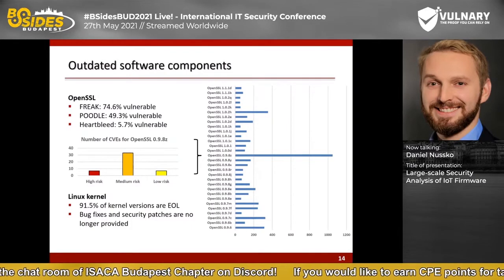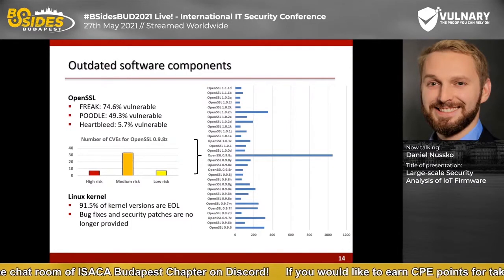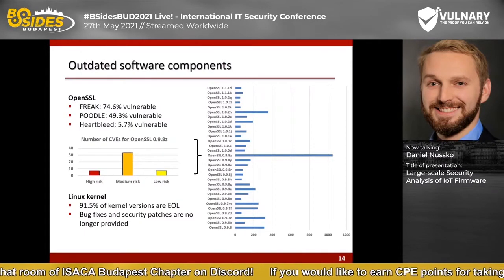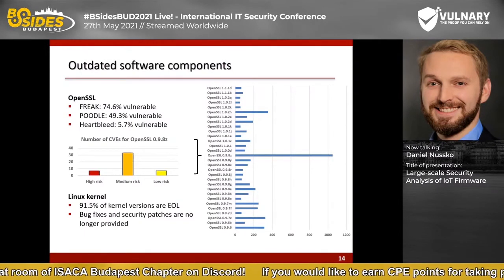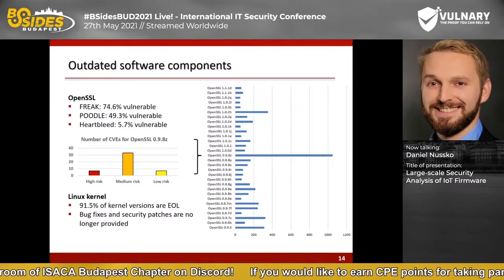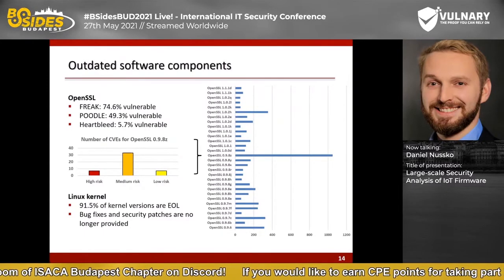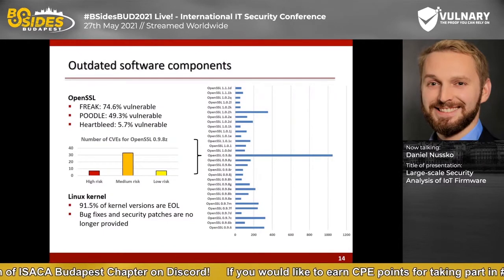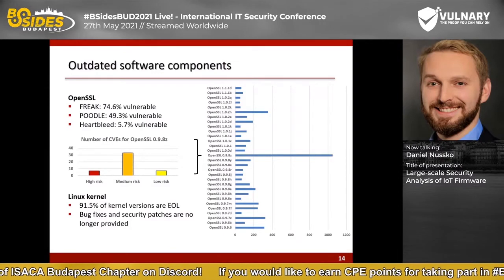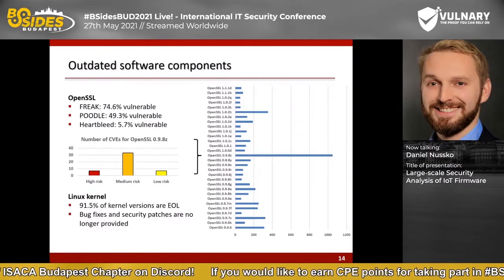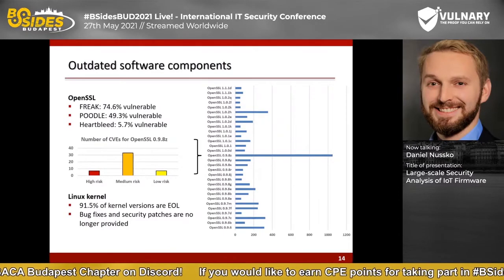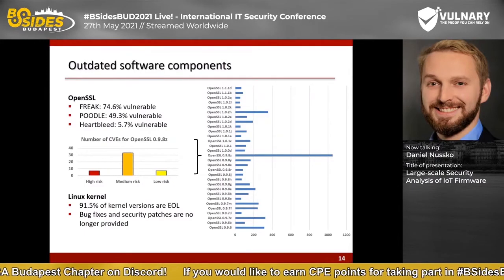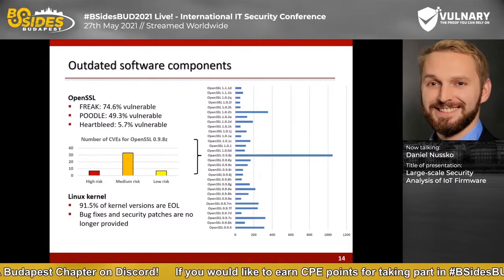Some interesting statistics regarding three famous vulnerabilities in OpenSSL: according to version information, about 75% of devices are affected by the FREAK vulnerability, about 50% by POODLE, and 6% by the Heartbleed vulnerability. OpenSSL is just an example — I created such statistics for all software components, also for the identified Linux kernel versions.